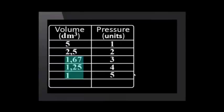To compress the trapped gas, we push the lid down until the new volume is half what it was to start with. It is now 2.5 decimeters cubed. Our pressure gauge tells us that the gas now exerts 2 units of pressure.